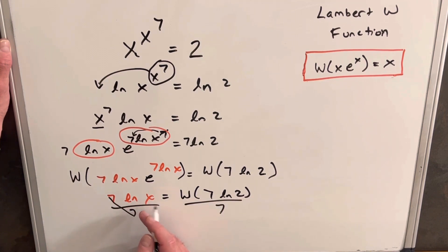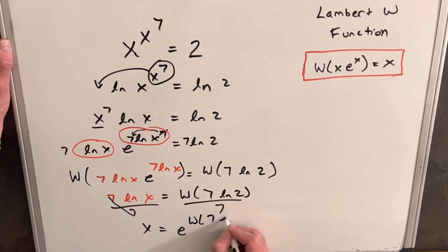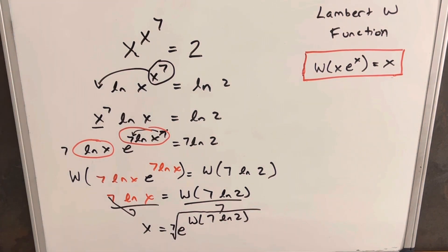Then we'll just use this property of the natural log to rewrite this as x equals e to the Lambert W of 7 ln 2. And I'm going to take this 1 over 7th, I'm just going to write it as a radical, as a 7th root.